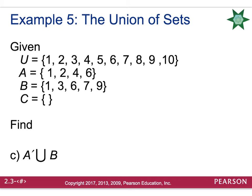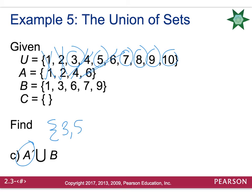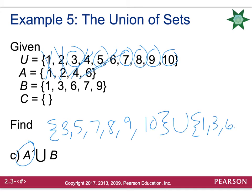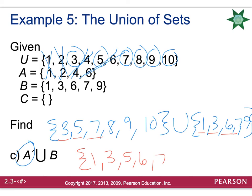They can also try to confuse you by throwing in the complement symbol. Just remember to first figure out what the complement is. We want A complement union B. A complement eliminates 1, 2, 4, 6 from the universal set, so A complement is {3, 5, 7, 8, 9, 10}. We want to unite that with set B, which is {1, 3, 6, 7, 9}. Uniting those two sets together, they would have: 1, 3, 5, 6, 7, 8, 9, 10 — pretty much everything except 2 and 4.